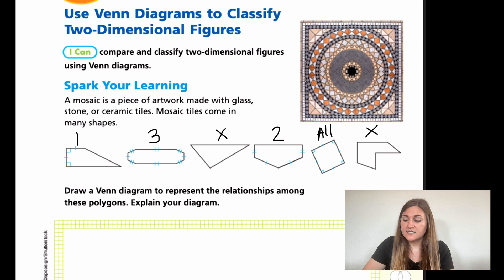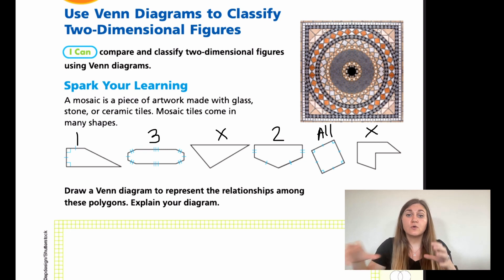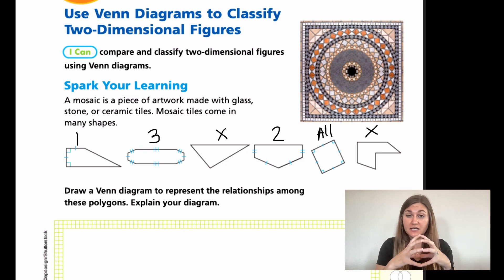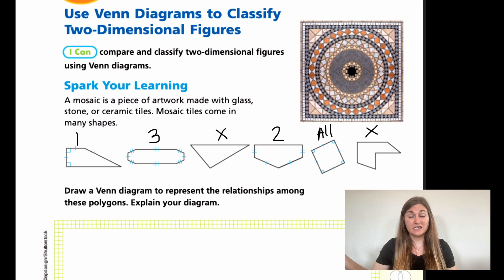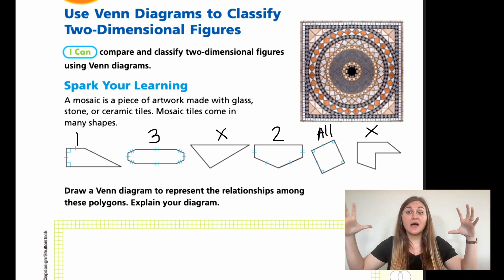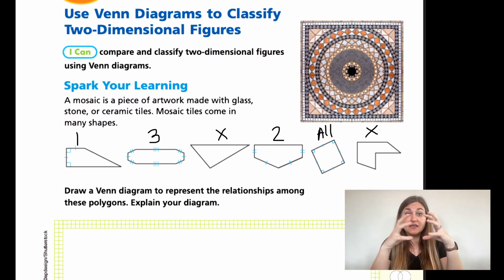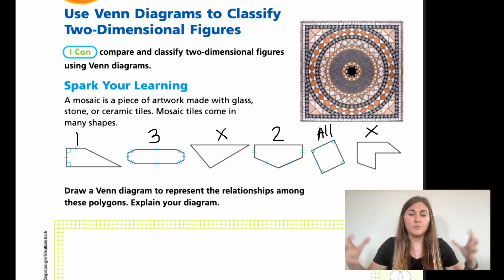So with our Venn diagram, we want to have layers. We want to show something that has all of the sides matching in the innermost layer. Then expanding outward — only two or more of the sides are matching, then only one is matching, and then outside means none of them are matching. Because if you have one side that's matching, that's the total — you have one. And inside that you can have two or more, and inside that you can have all of it. So it's going to be almost like an onion — this expanding Venn diagram.